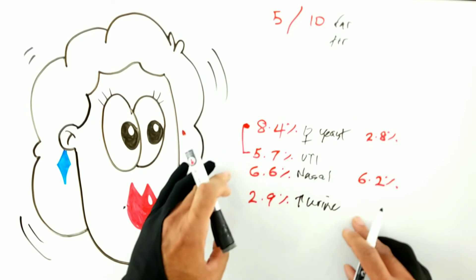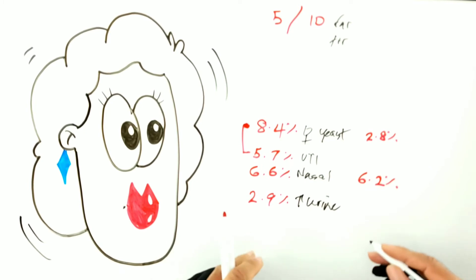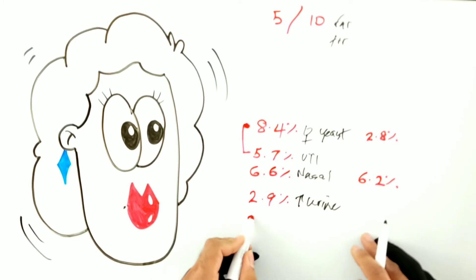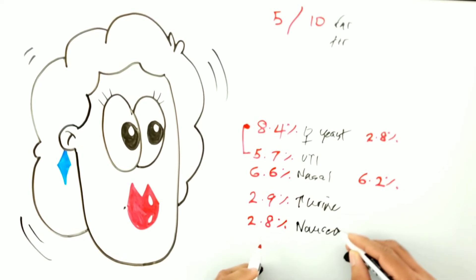Next up, then, the last of the most common - everything after these guys is usually like 1% or less - in 2.8%, so roughly three people in every hundred, complain of nausea. And nausea in general is something that you tend to see across all drugs.